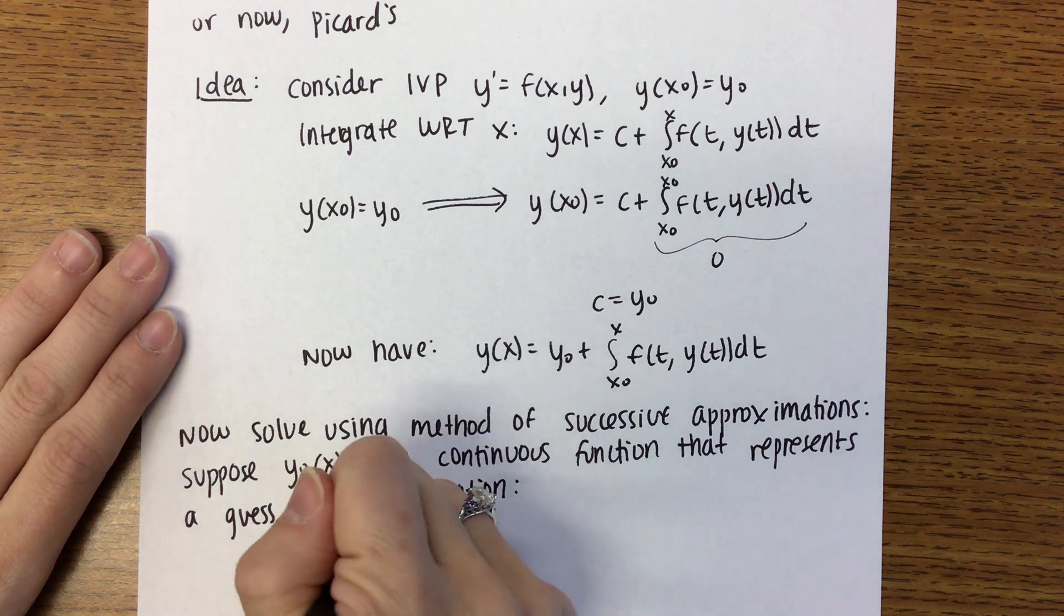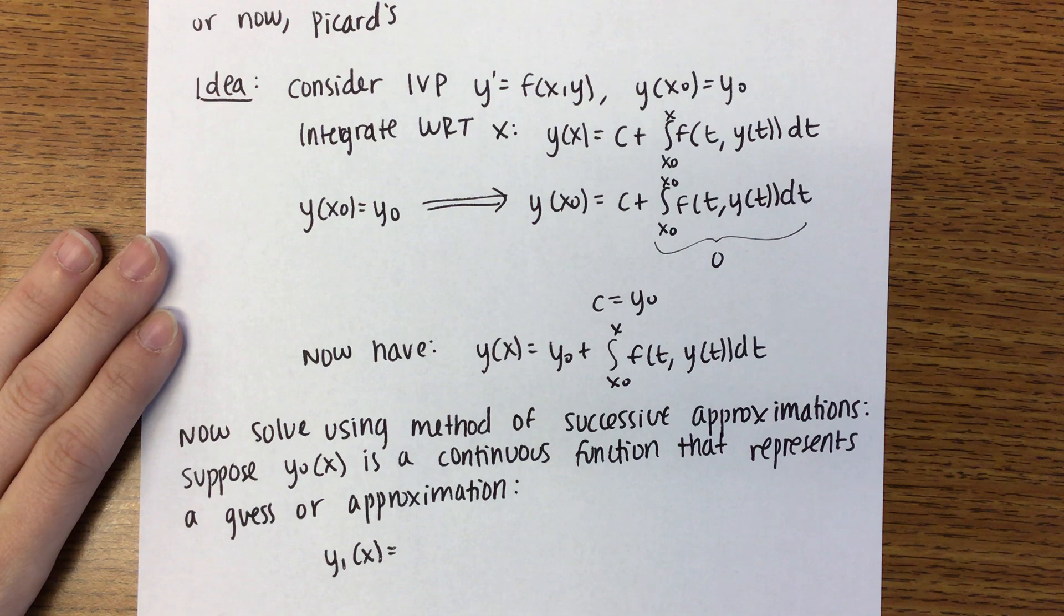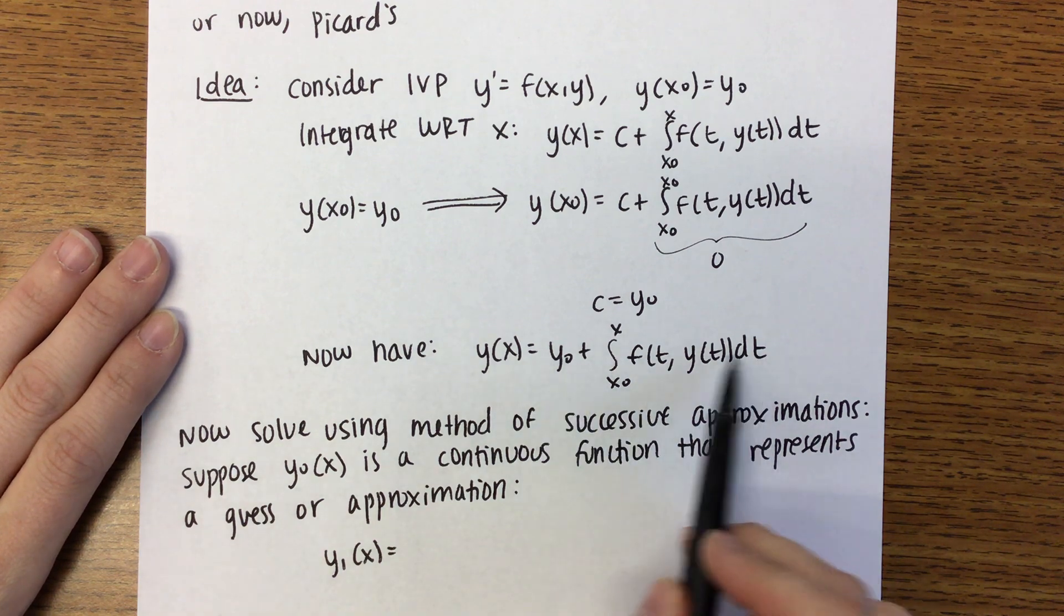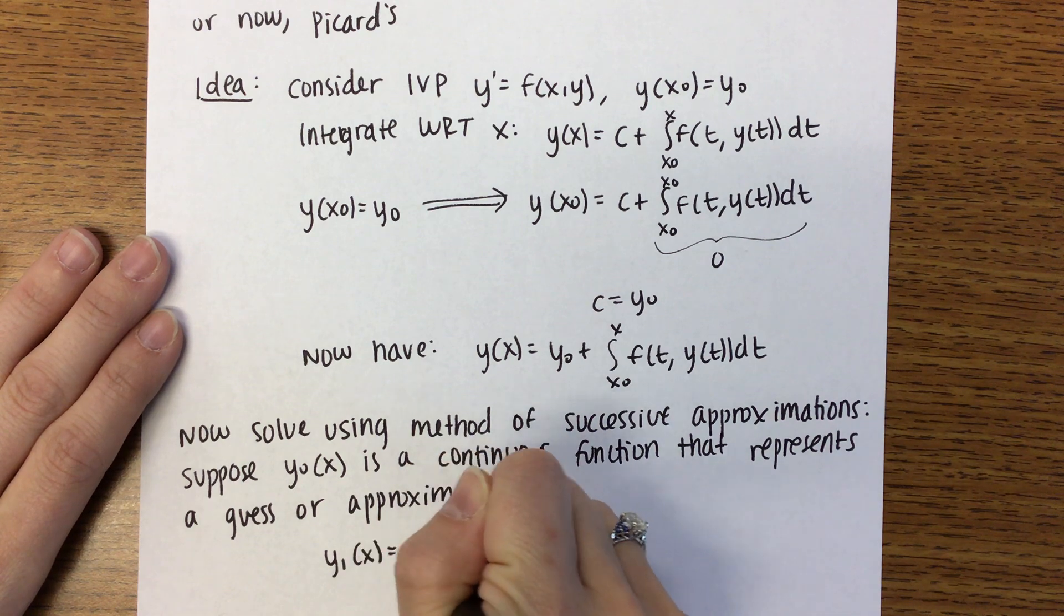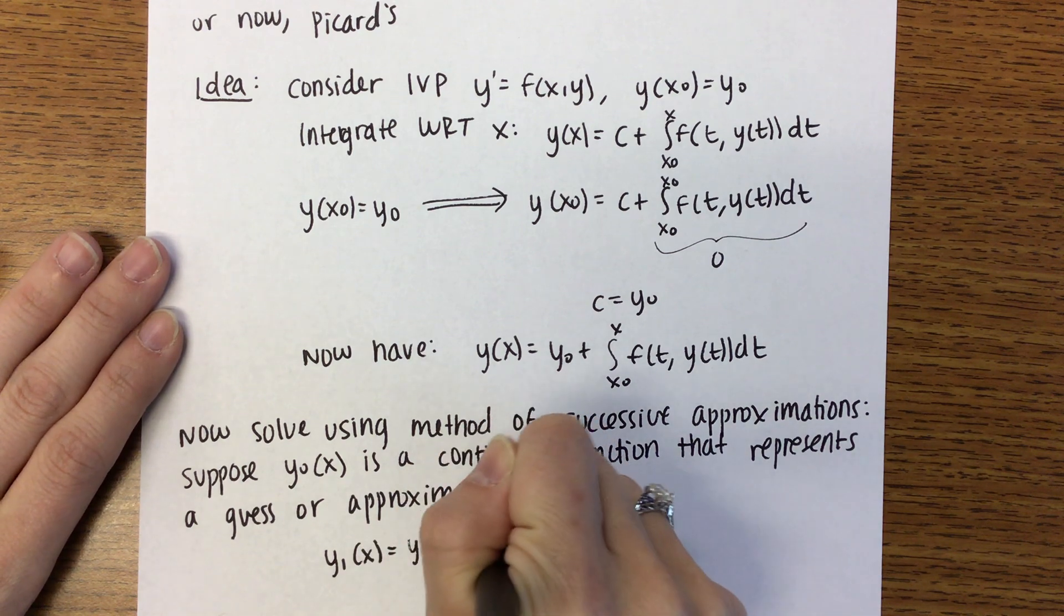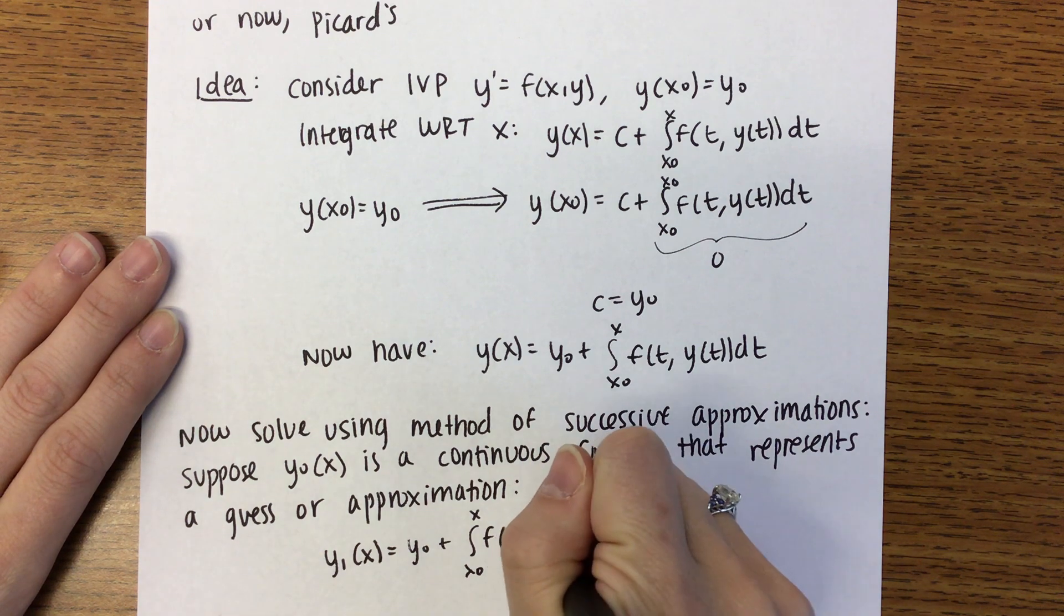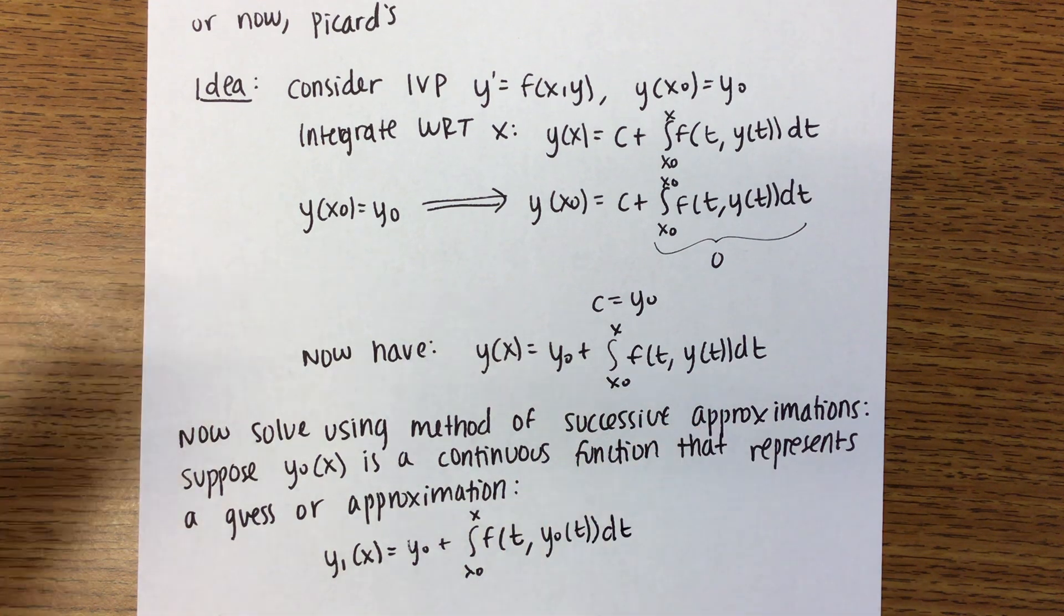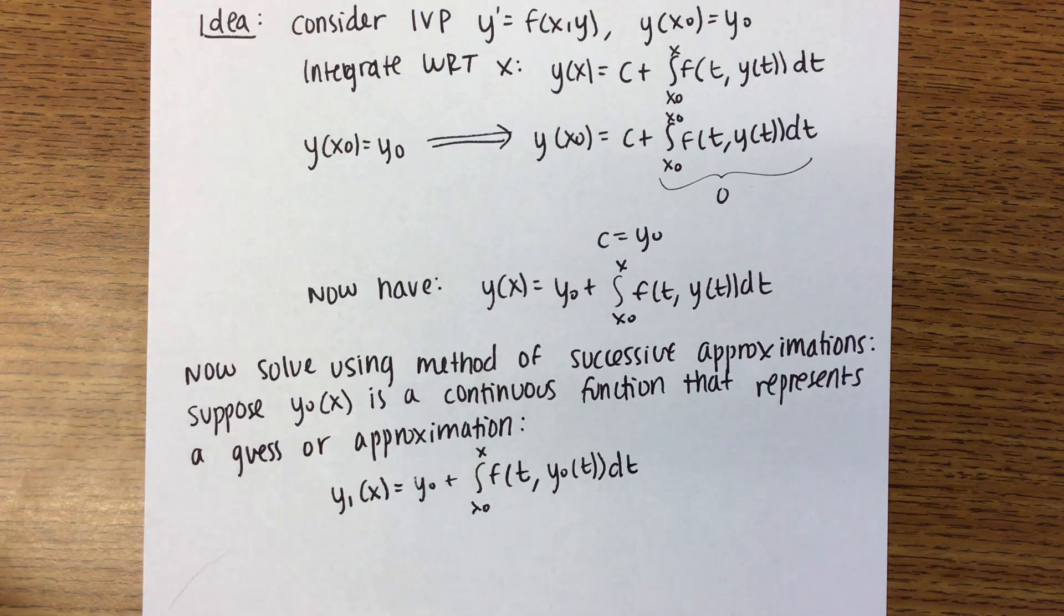Here's what you're going to do then. You're going to use that Y0 to calculate Y1 of X. Bless you. What's up above here? You're going to follow that. So that's equal to Y0 plus the integral from X0 to X of F of T. Now you're going to use Y0 of T because that's your initial guess or approximation for the solution.